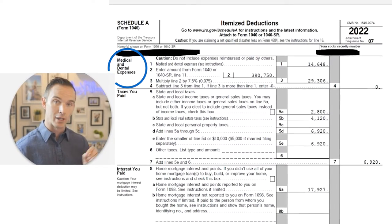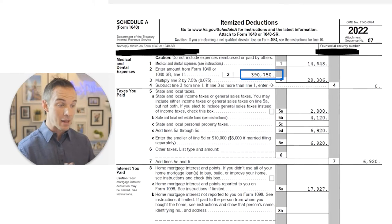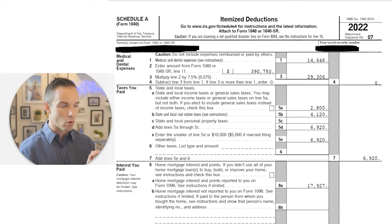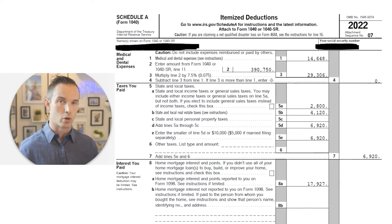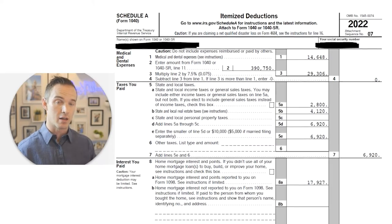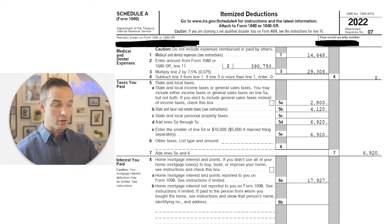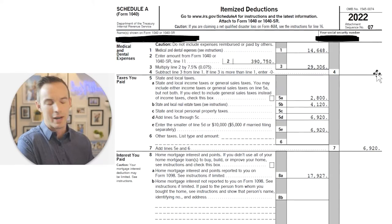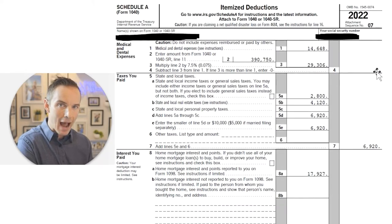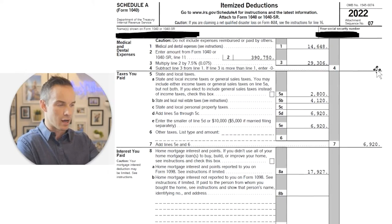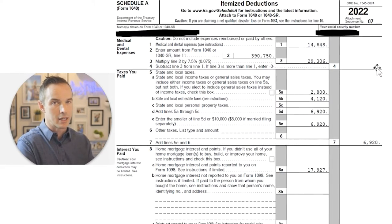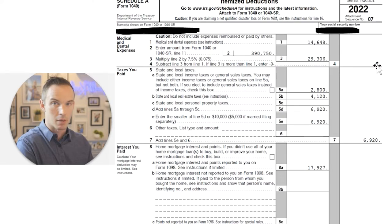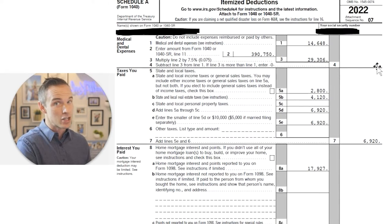First thing on Schedule A: medical and dental expenses. This household's income was around $400,000 and they had about $15,000 in out-of-pocket medical costs. One thing many people don't know is that medical expenses must exceed 7.5% of your AGI before you get a deduction. With AGI of ~$391,000, that threshold is about $29,000 — so even with $14,000 in medical costs, they get a big goose egg. Always keep track though, since surgeries, childbirth, or other unexpected costs can add up quickly.